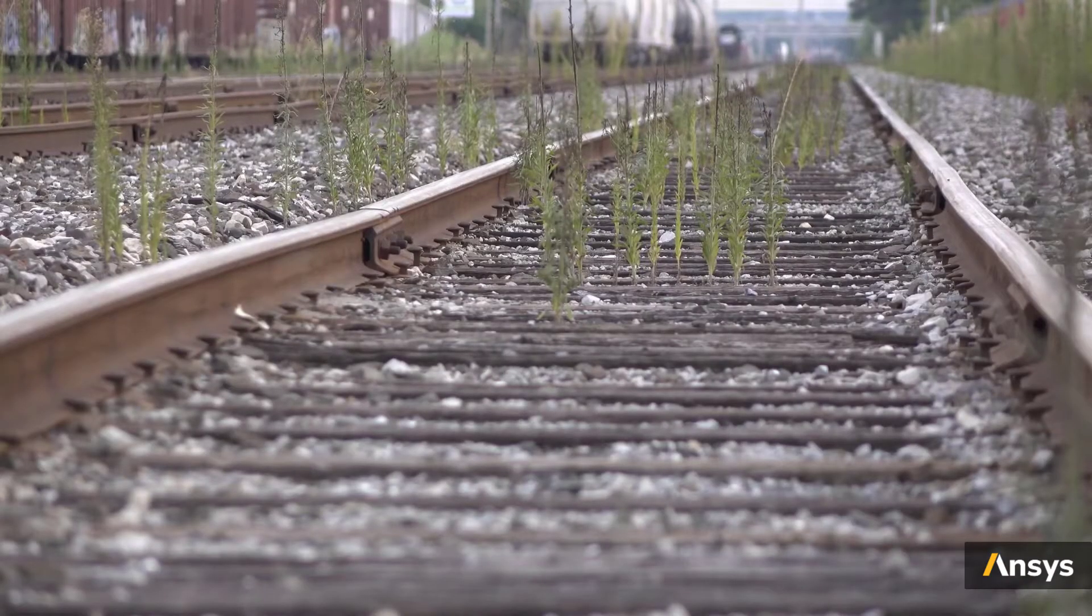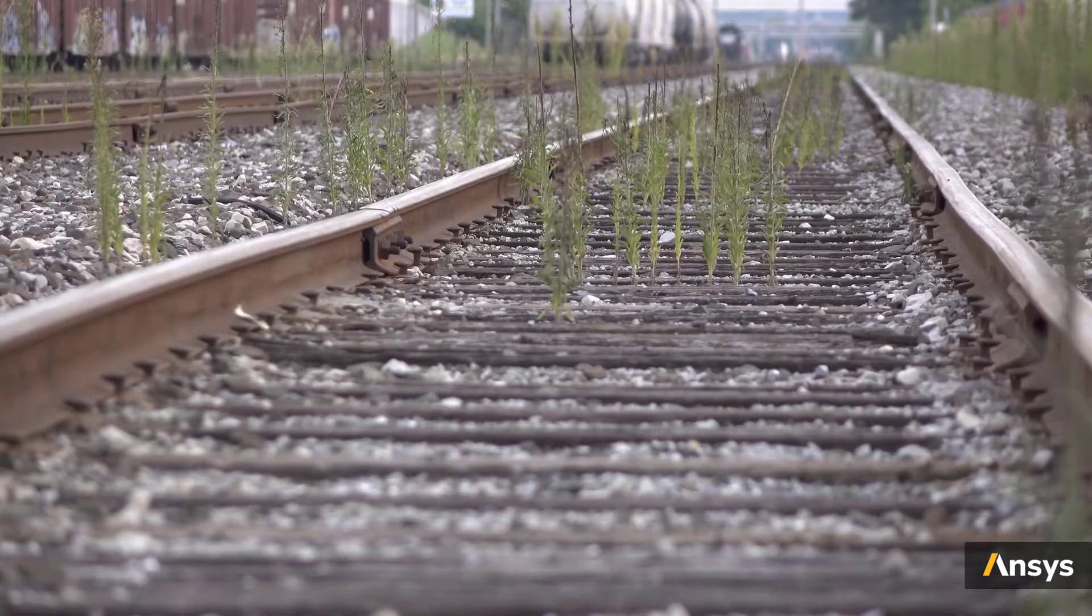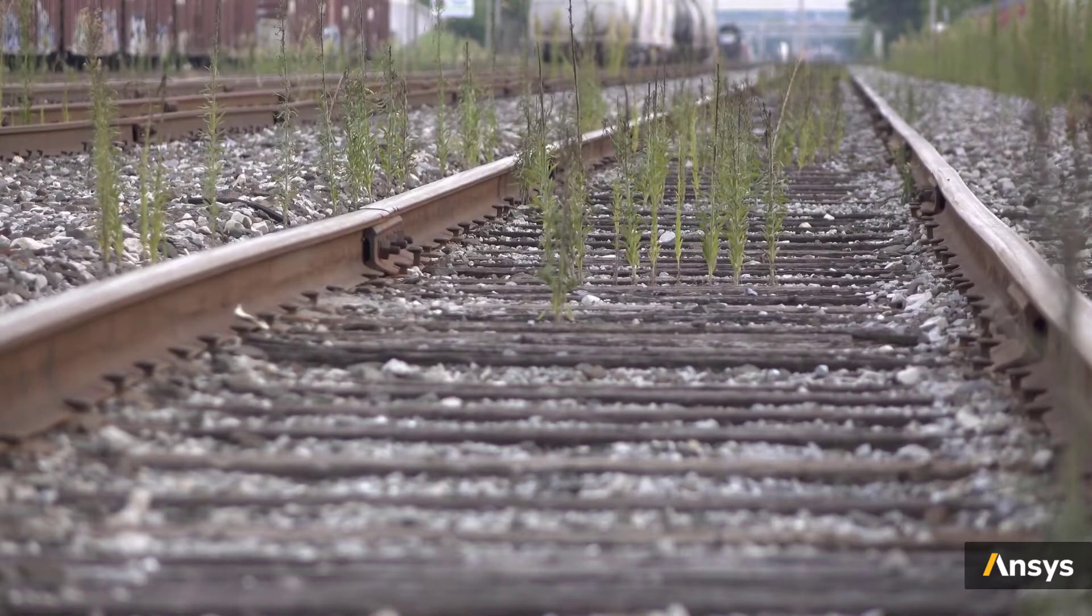Buckling usually occurs when the structure is subjected to compressive loads, but it may happen under tensile loads too. A good example for this is called the sun kink that occurs in rail tracks in very hot weathers due to thermal expansion.